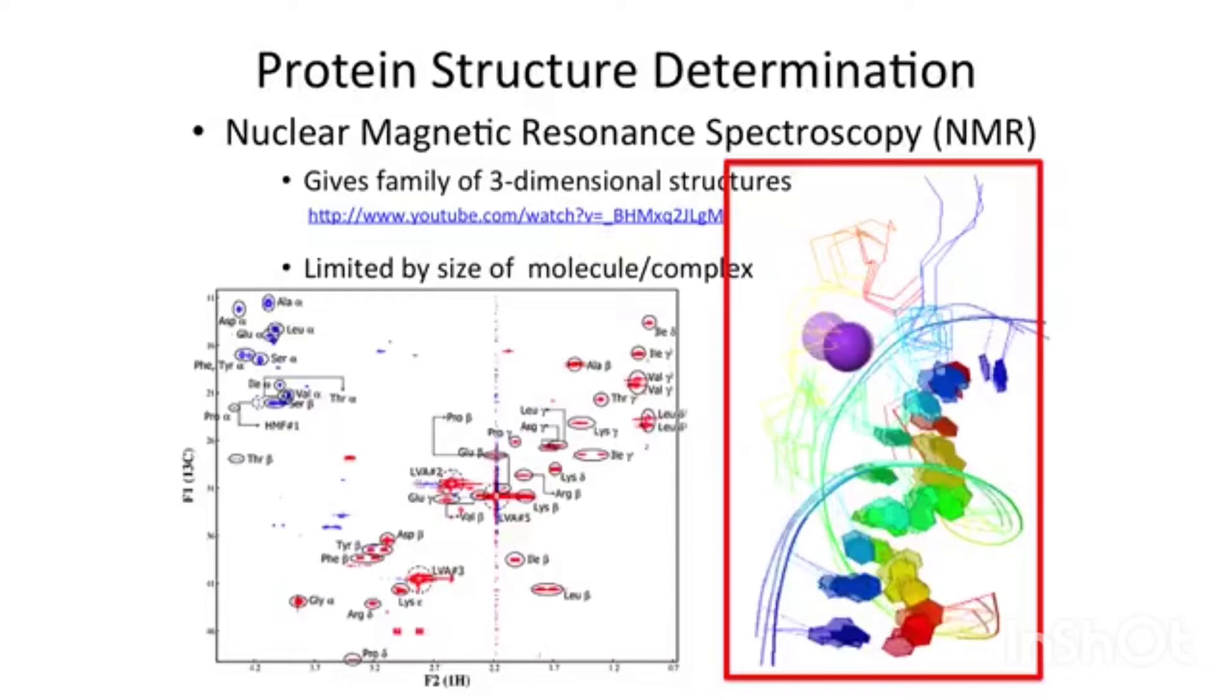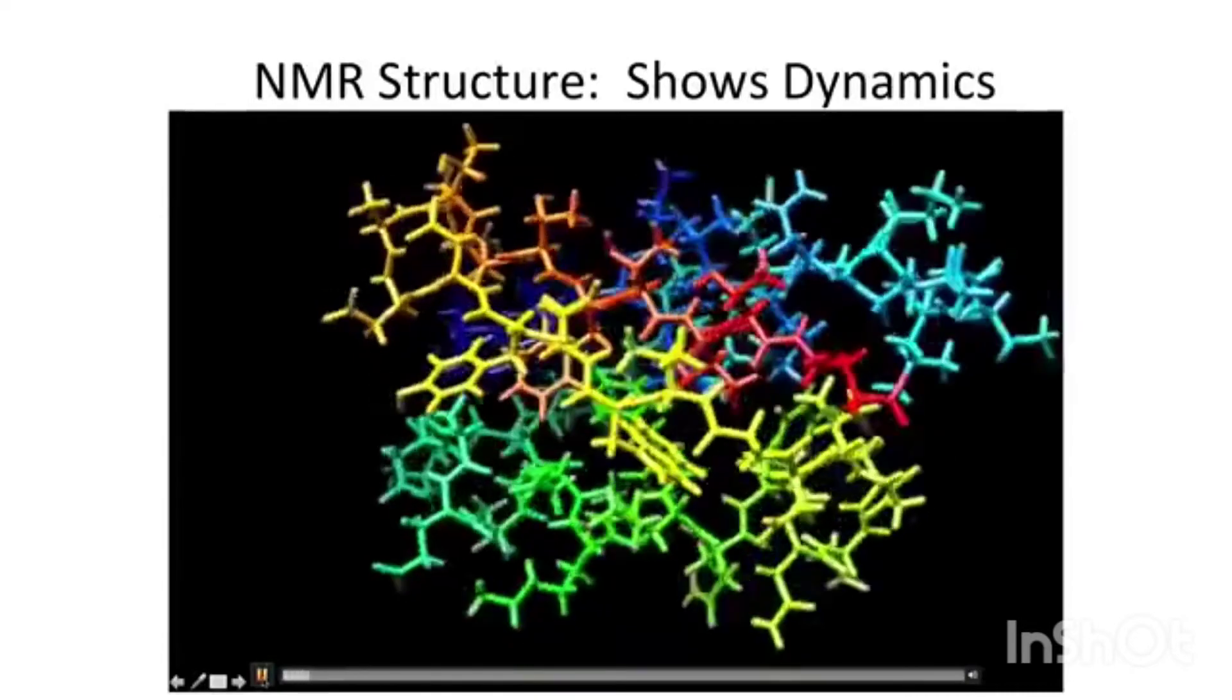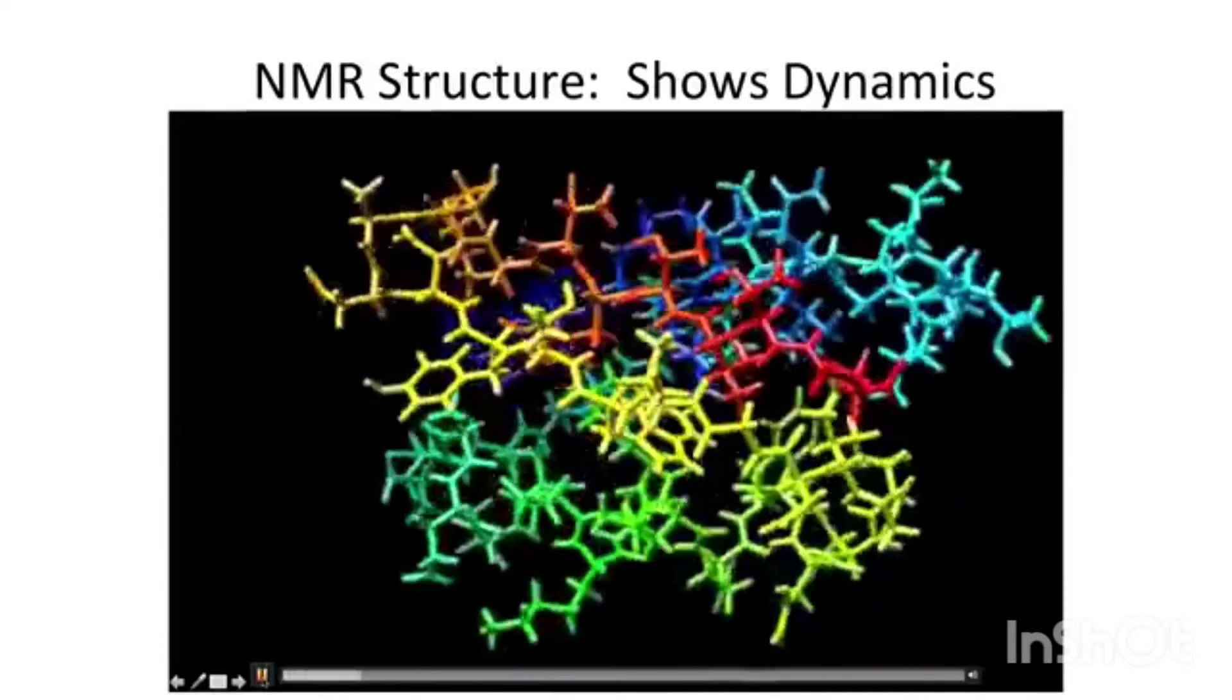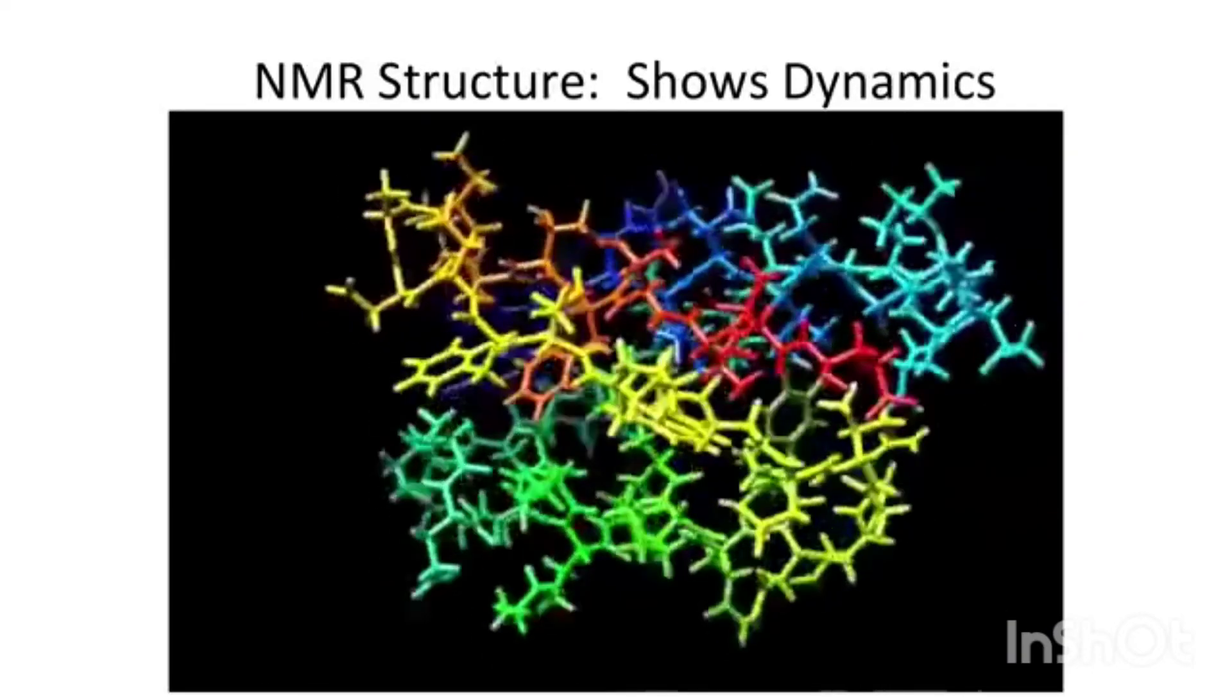When you look at the structure on the right, you can see that the side chains are not well-resolved. They're in multiple places. Even the backbones move around. It's not that crisp, beautiful structure that you see with crystallography, but it's also much more realistic. The problem is that NMR is limited by how big the protein is. I just want to remind you that proteins are dynamic, even ones that are those lovely fixed structures we see from X-ray crystallography.